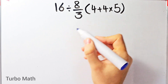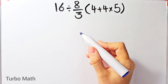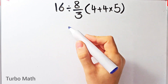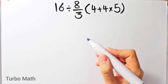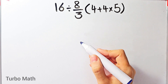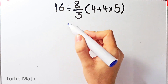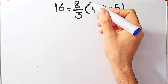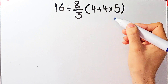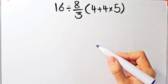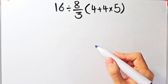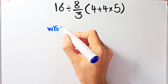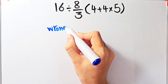Hi friends, welcome to Turbo Math channel. A lot of people get confused when they see this question — they don't know which operation to do first and they might get it wrong. The question is: 16 divided by 8 over 3, then times 4 plus 4 times 5. What is the answer? Let's first look at the wrong way of solving this question.